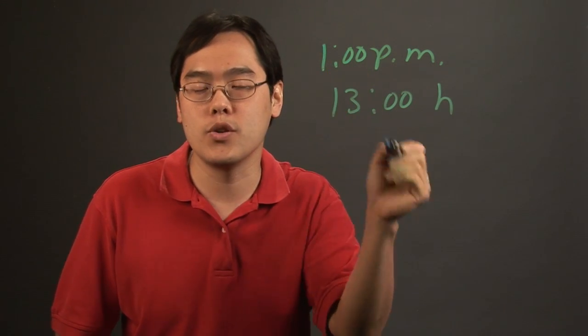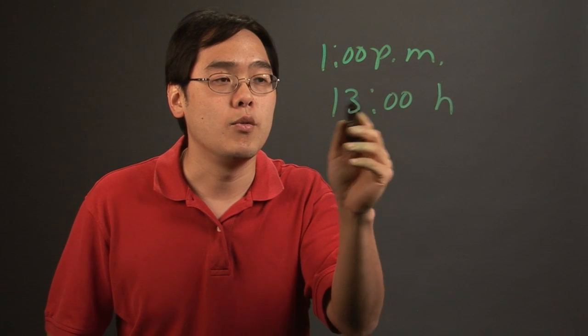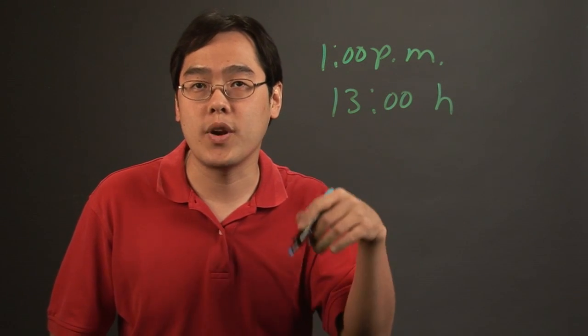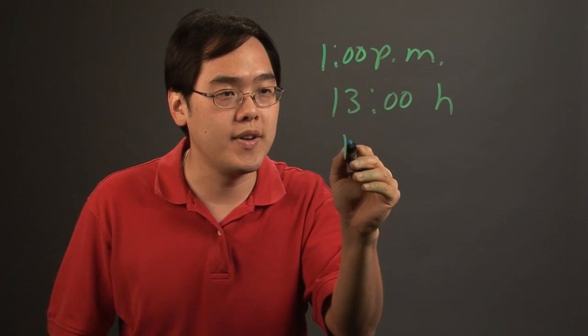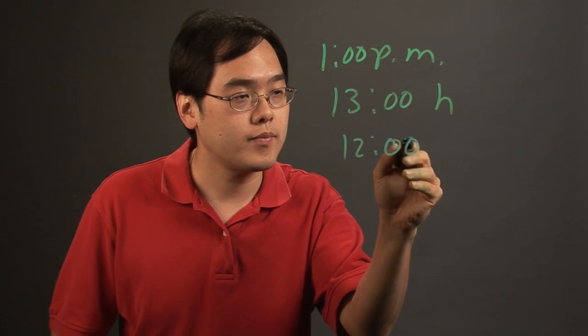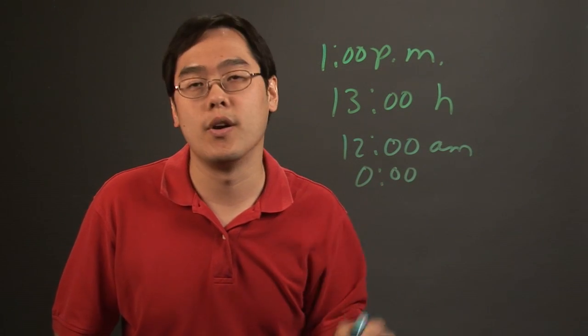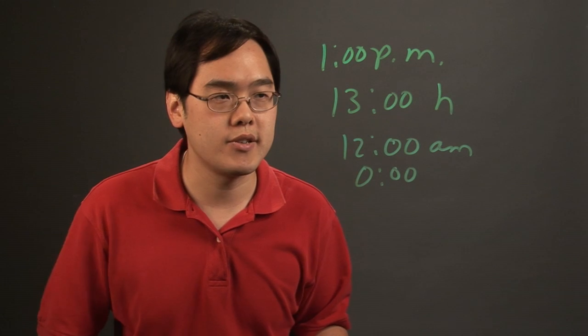...12 o'clock—we do 12, 1, 2, 3, 4, 5, 6, 7, 8, 9, 10, 11, and then back to 12 again—but with military time you want to think about everything goes from 0 to 23 hours, and then 59, and then midnight (12 a.m.) goes to 0000 in military time. So when it comes to adding and subtracting military time, you want to keep this in mind.